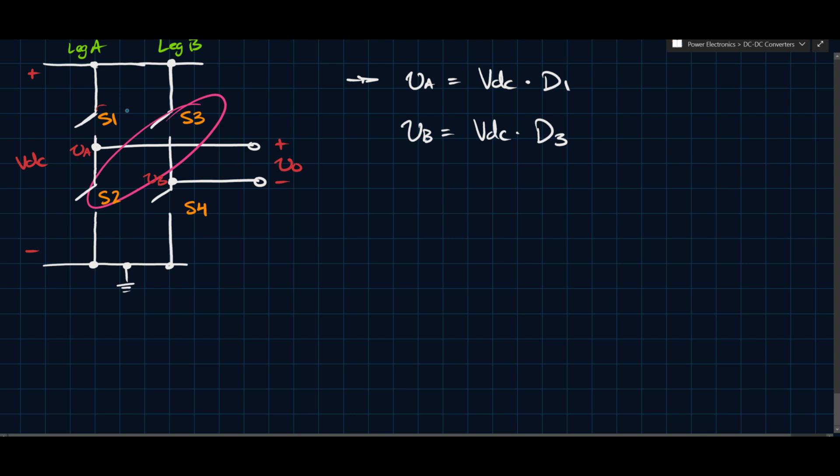So S1 and S4 switch together, S2 and S3 switch together, so they switch in these sort of diagonal pairs. And that's usually referred to as a bipolar switching strategy because of the waveforms that it produces.